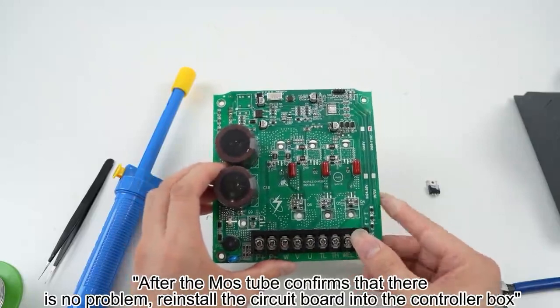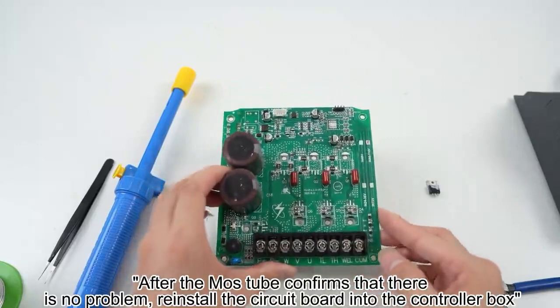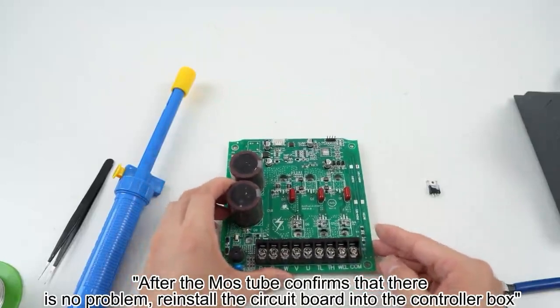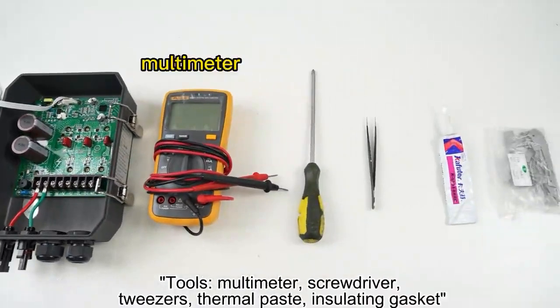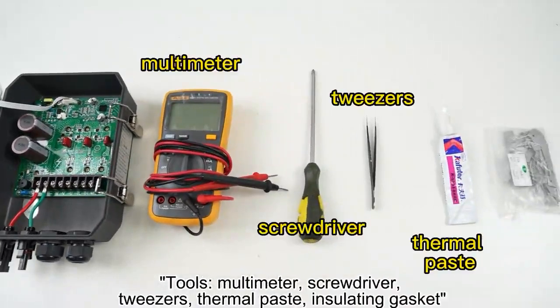After confirming the MOS tube has no problems, reinstall the circuit board into the controller box. Tools: multimeter, screwdriver, tweezers, thermal paste, and insulating gasket. First,